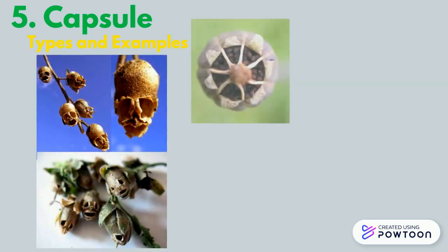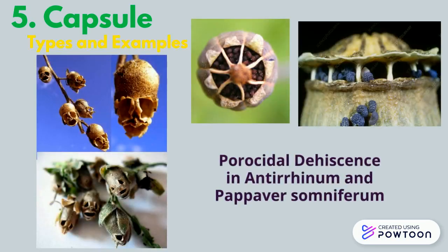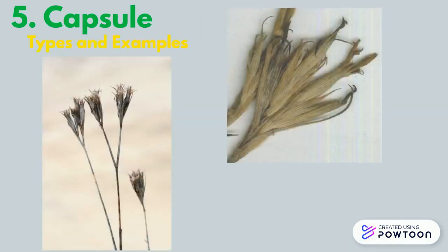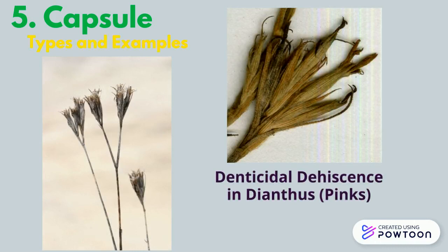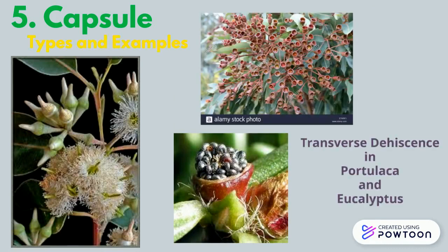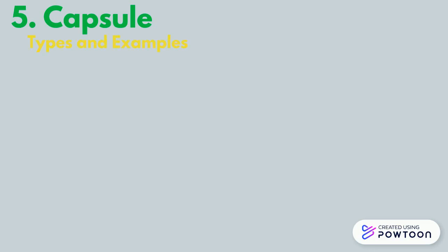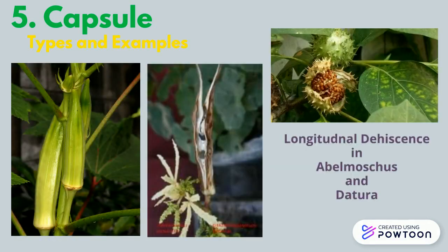The pictures show poricidal dehiscence in Antirrhinum and Papaver somniferum, denticidal dehiscence in Dianthus which is commonly known as pink, and transverse dehiscence in Portulaca and Eucalyptus. These two pictures show longitudinal dehiscence in Abelmoschus, bhindi, and Datura. Longitudinal dehiscence can further be of two types: loculicidal or septicidal.